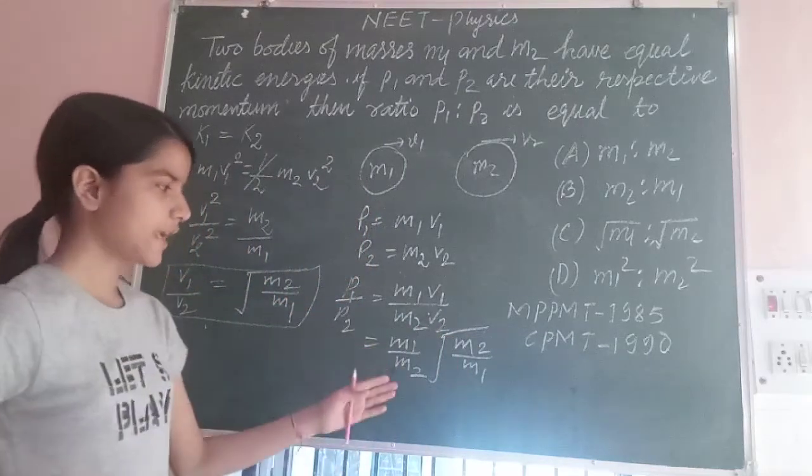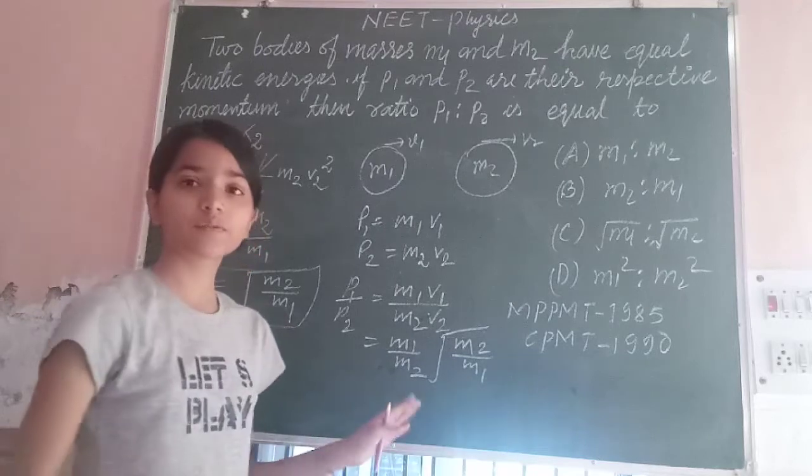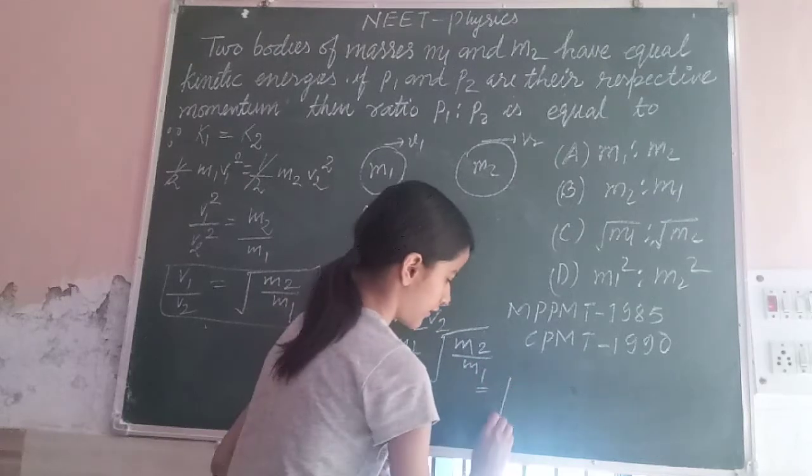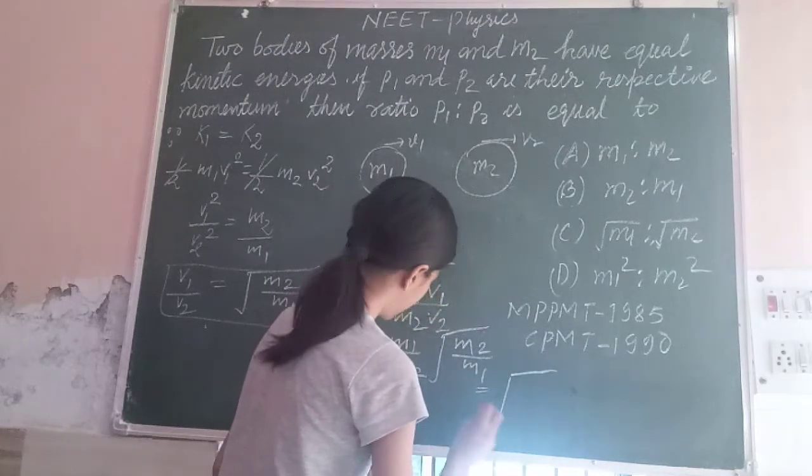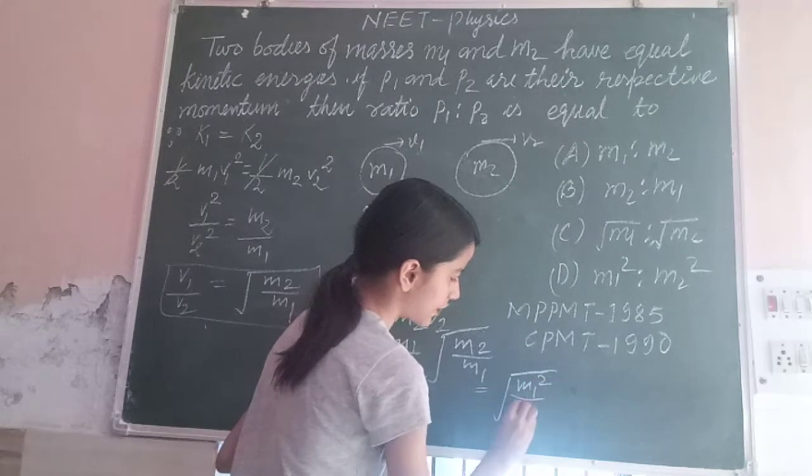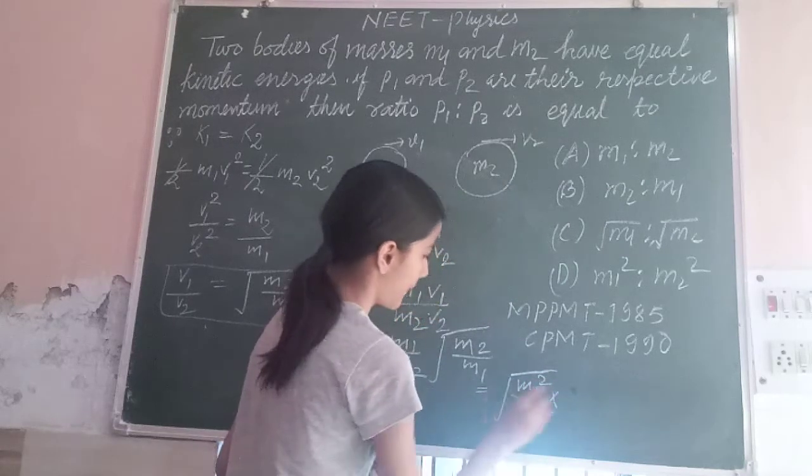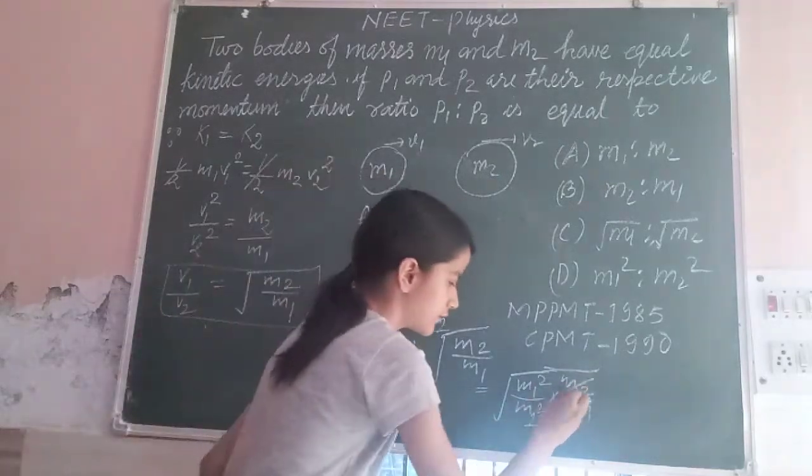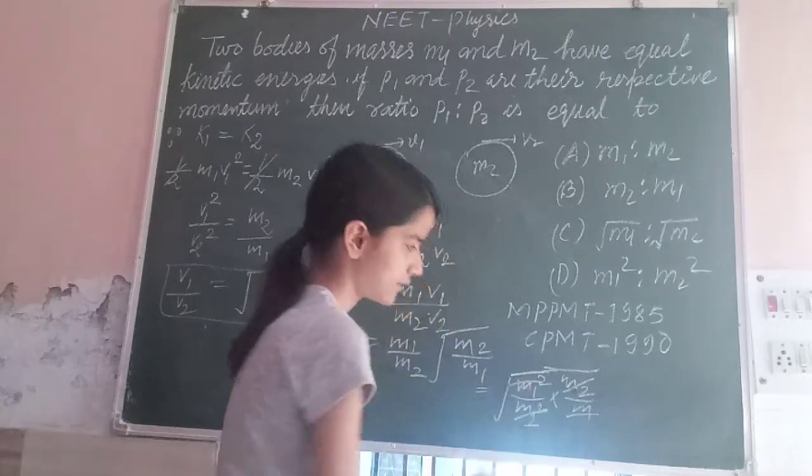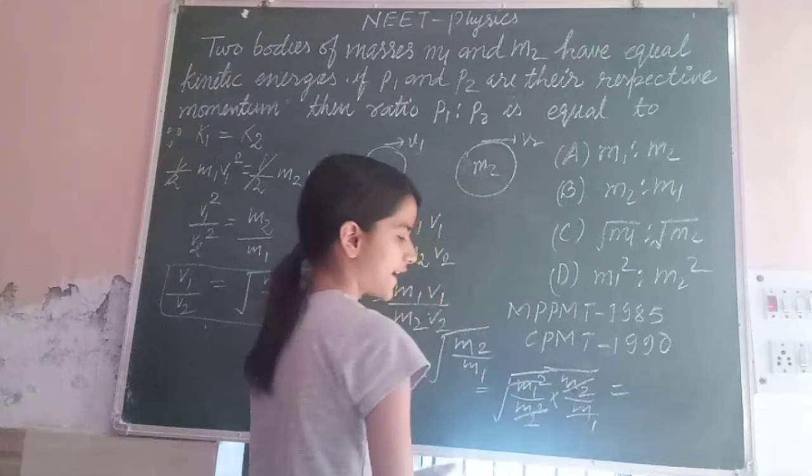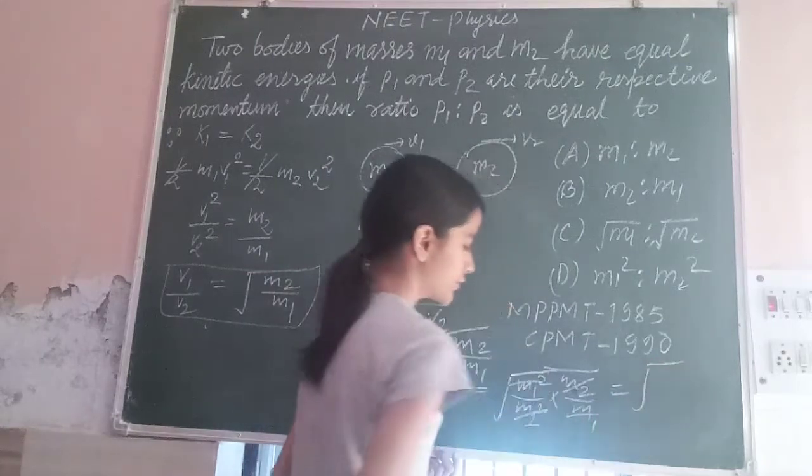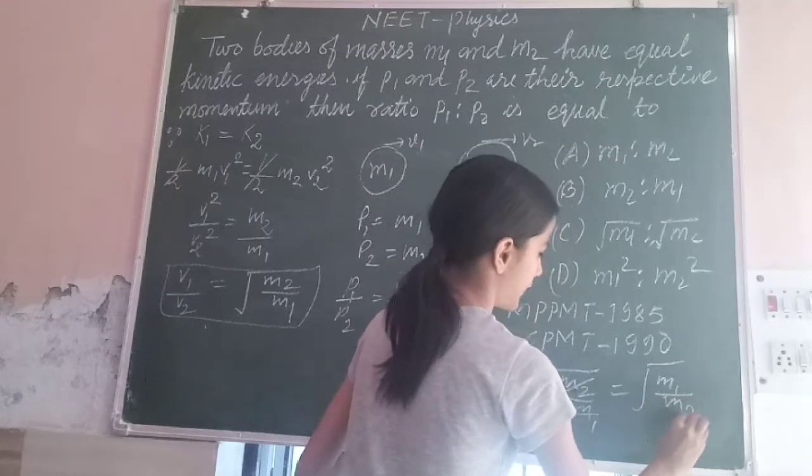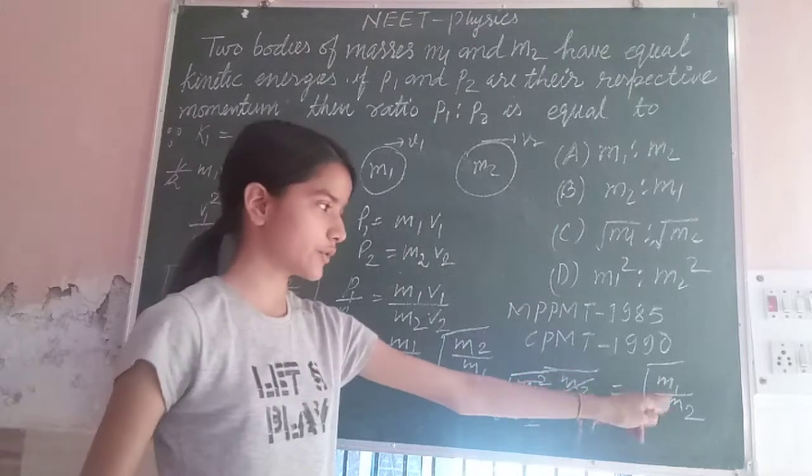So, M1 upon M2 under root M2 upon M1. Now, we will take this M1 upon M2 into under root M1 square upon M2 square into M2 upon M1. This M2 will cut with M1, this M2 will cut with M1, and this M1 will cut with M1.